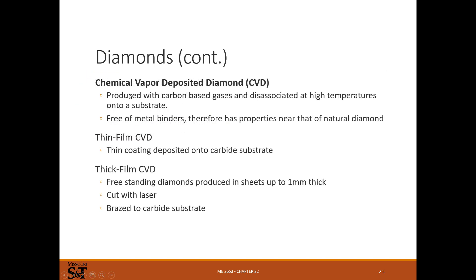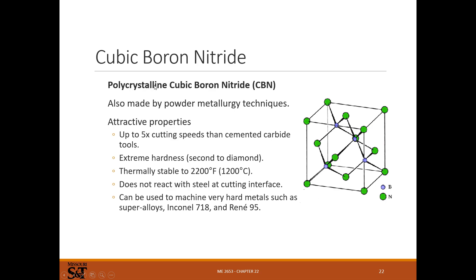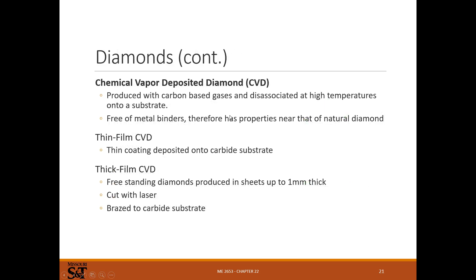Diamond tooling uses chemical vapor deposition to coat with tiny diamonds — you can get thinner or thicker coatings, but it's pretty rare and not something you see much. Cubic boron nitride (CBN) is close to diamond on the Mohs scale. You see some CBN coatings, and you can get CBN inserts for cutting really expensive, hard-to-machine super alloys like Inconels. These are expensive materials, and the tooling is going to be really expensive too — CBN and diamond tooling are pretty rare to encounter.